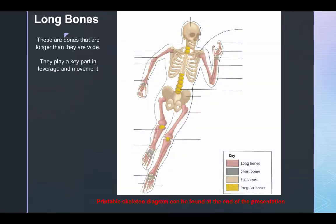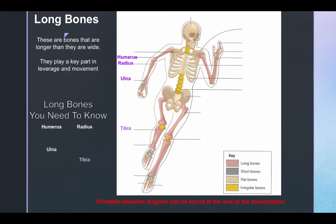Here are some of the key bones that you should know: the humerus, radius, ulna, tibia, fibula, metatarsals, phalanges, and femur. These are all the long bones that you should know.